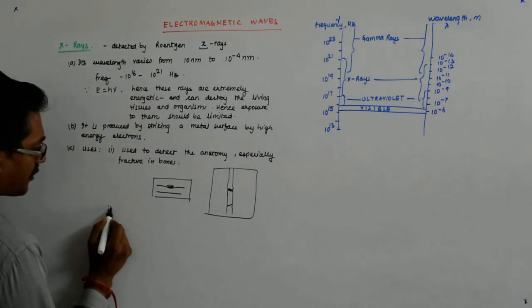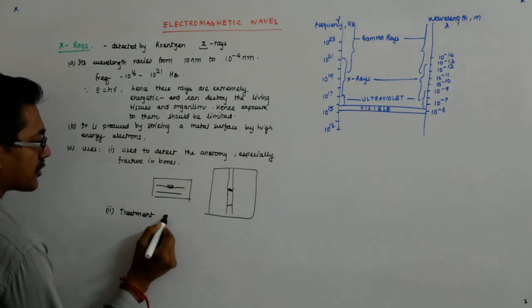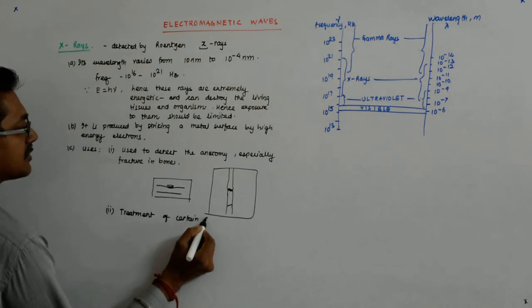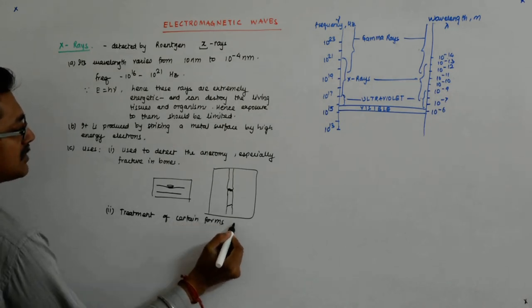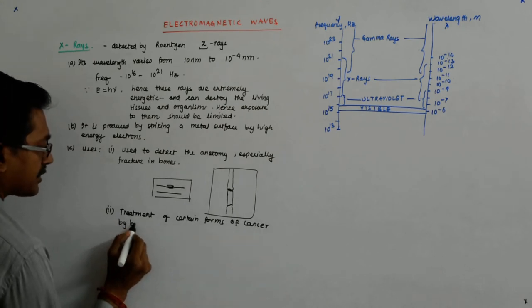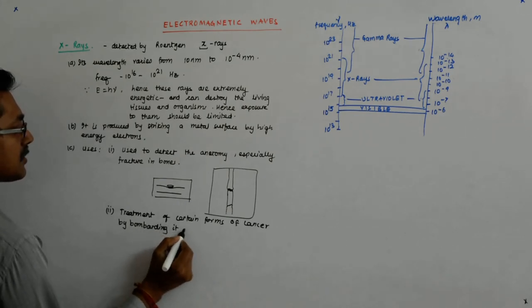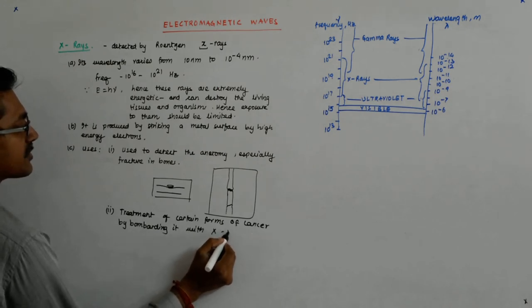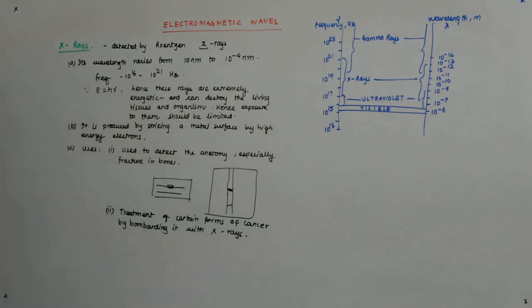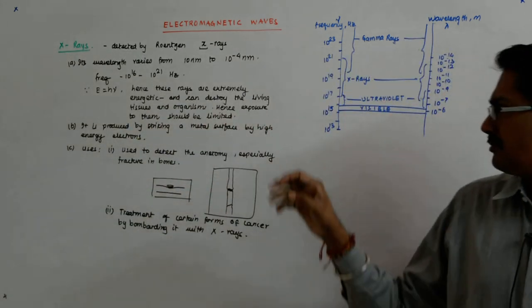Also, some forms of cancer are treated by bombarding it with x-rays. Treatment of certain forms of cancer by bombarding it with x-rays. And why are you able to bombard or kill the cancerous cell? Because of this high energy.